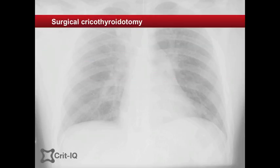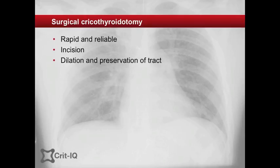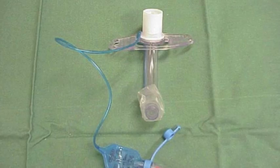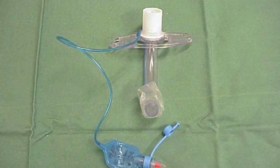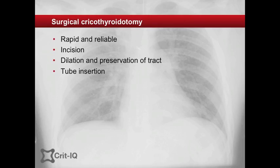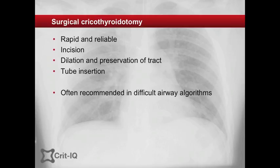Surgical cricothyroidotomy is a rapid and very reliable method of gaining emergent access to the airway. It involves an incision along the cricothyroid membrane, dilation and preservation of the tract, and insertion of a small cuffed tube, usually a size 6 tracheostomy tube or smaller, into the airway. Because of the simplicity and reliability of the method, it is often recommended in difficult airway algorithms.